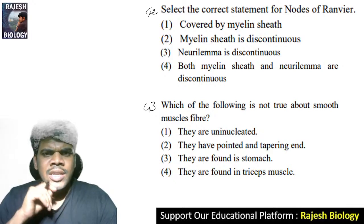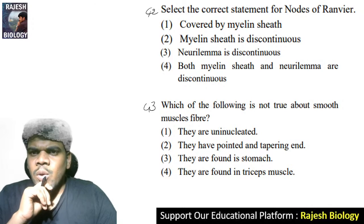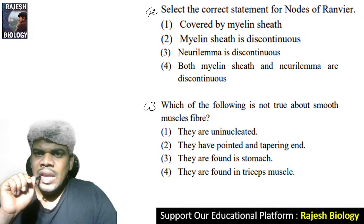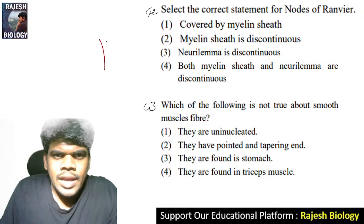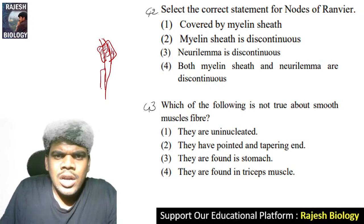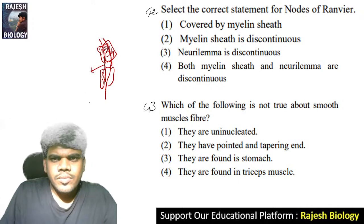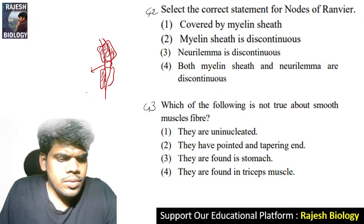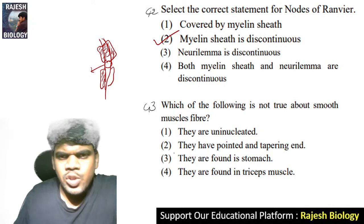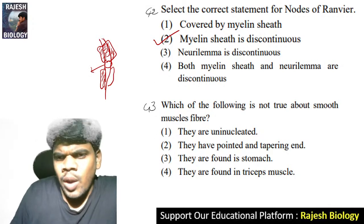Forty-second question: select the correct statement for the nodes of Ranvier — it is from nervous tissue in structural organization. Nodes of Ranvier — myelin sheath is discontinuous. The axon: the internode is covered by the myelin sheath; the portion not covered by the myelin sheath is called the node of Ranvier. The myelin sheath is discontinuous. Forty-third question: which of the following is not true about smooth muscle fiber? They are found in triceps muscle — actually biceps and triceps are skeletal muscles, not smooth muscles.